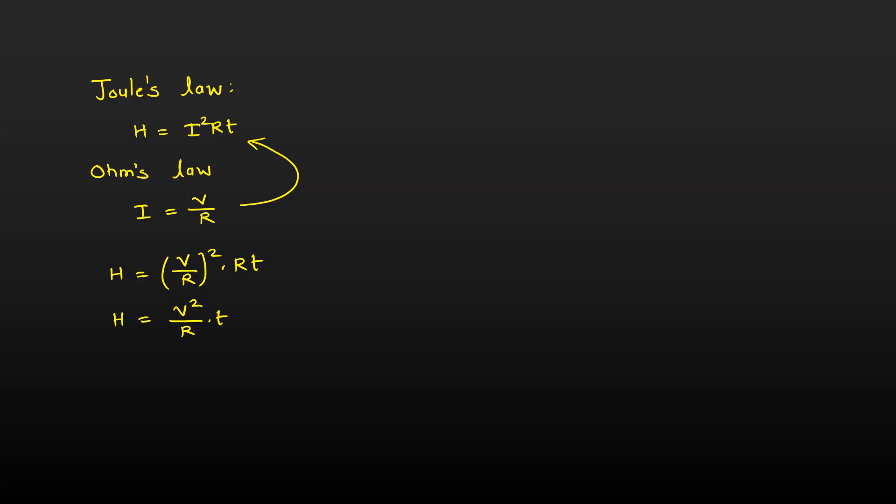So in the question, it was said that the battery is same. That means the potential difference or the voltage is constant. What else is constant? The time. Time is also constant. So V and T, both of them are constants. So because of that, I can rewrite this equation as 1 by R multiplied by V square times T. So V square times T, that is in the bracket, which is constant. So this equation, we can write it as H is inversely proportional to the resistance.